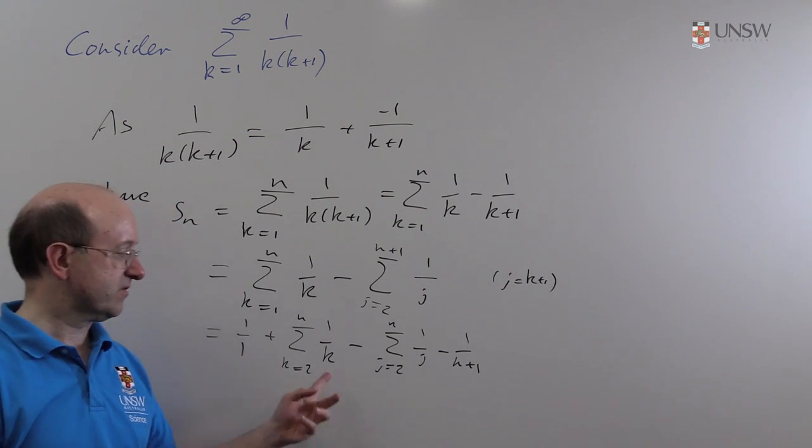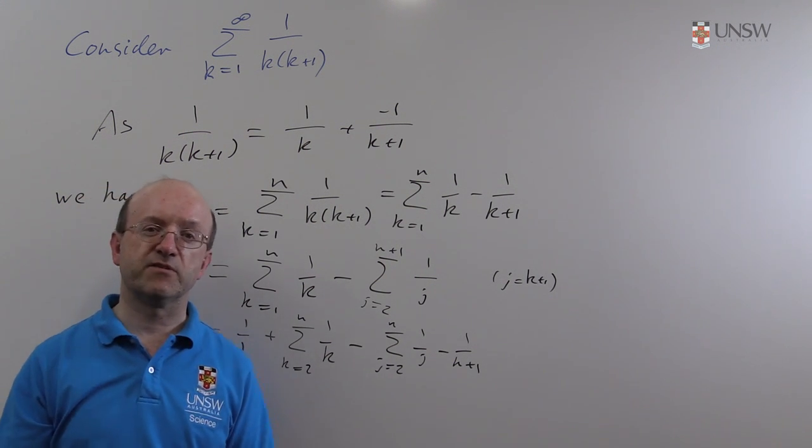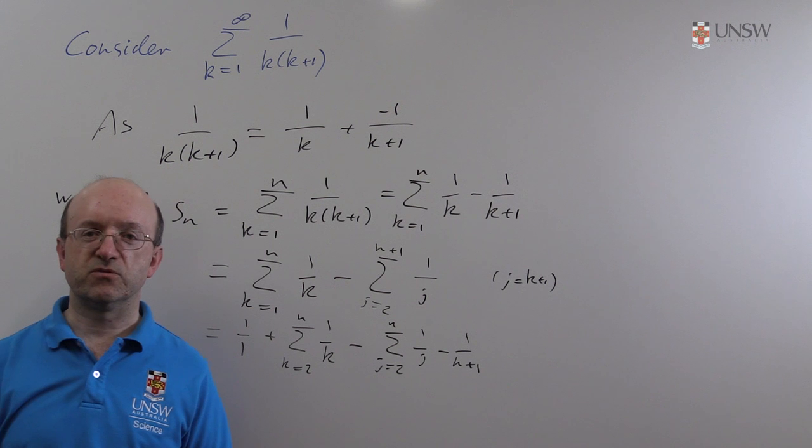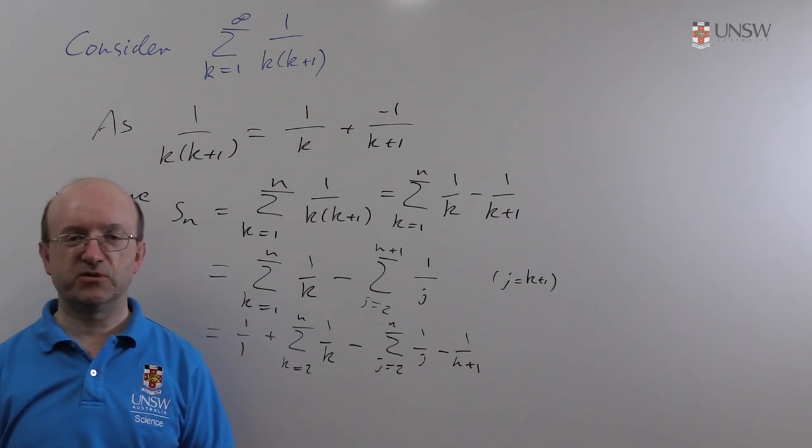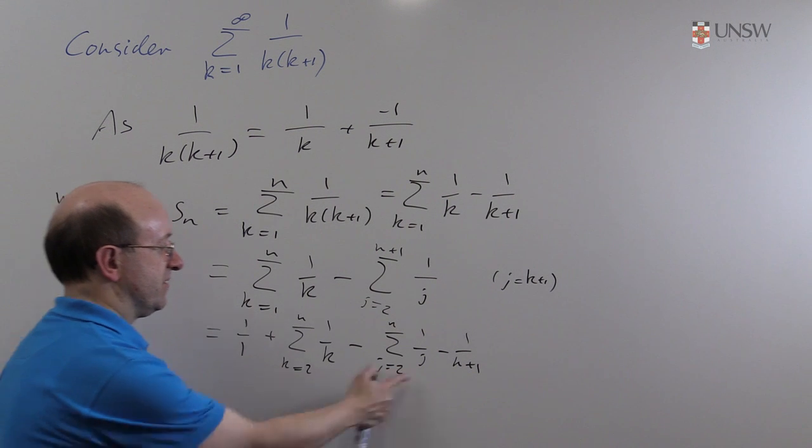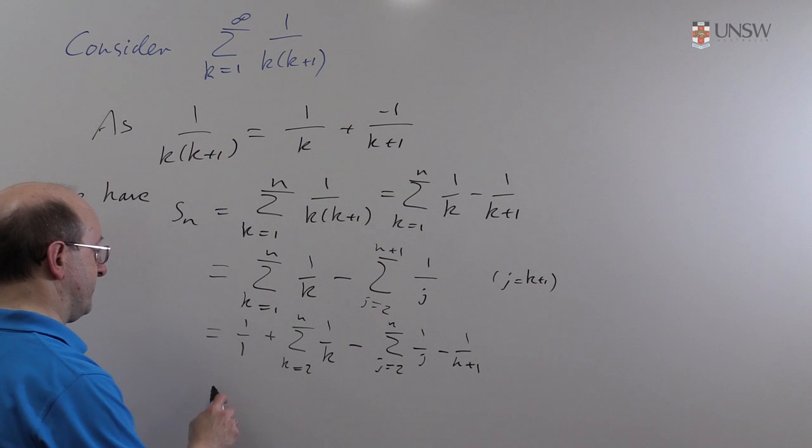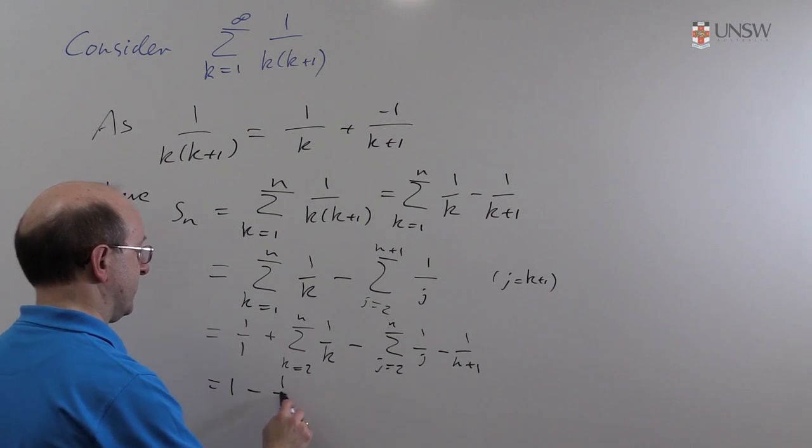These terms clearly cancel off because the k and the j are just dummy variables. It doesn't matter. In integration, for example, if you integrate t squared from 0 to 1 dt or x squared from 0 to 1 dx, it's the same answer. Same idea here. So these two terms cancel themselves off. All we're left with is the 1 and the 1 over n plus 1.